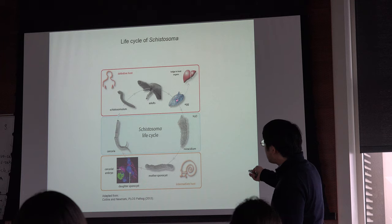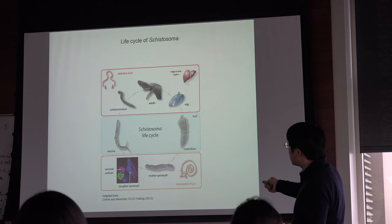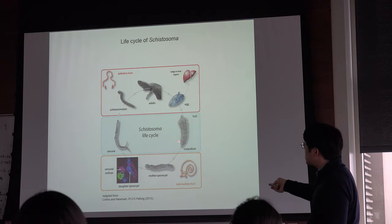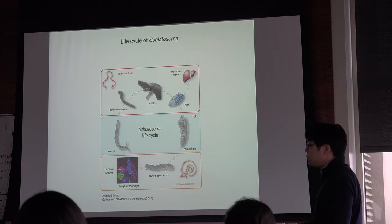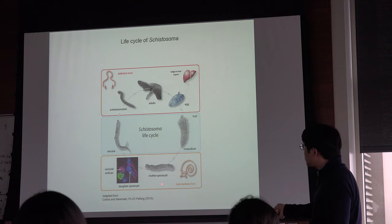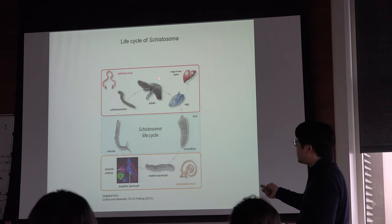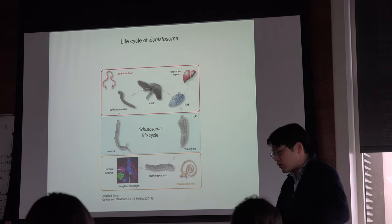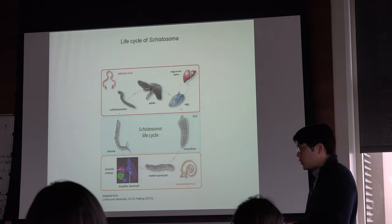Some of these eggs get excreted through urinary feces, and these eggs hatch in water into a creature called miracidia, which swims around to find a suitable intermediate host, where they penetrate into the snail tissue, transforming into sporocysts. The sporocysts undergo asexual reproduction — they switch between sexual and asexual reproduction, clonally amplifying themselves to fill up the snail tissue.